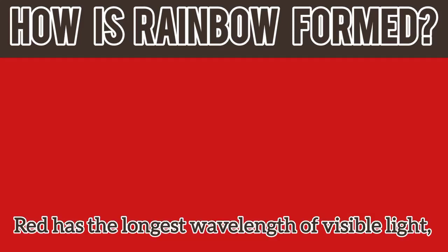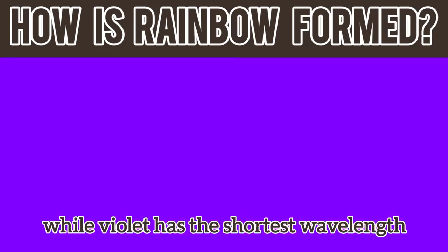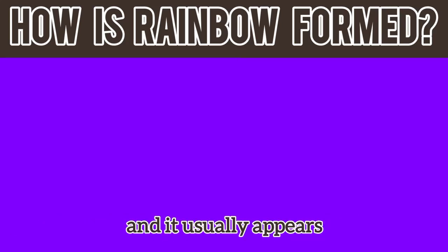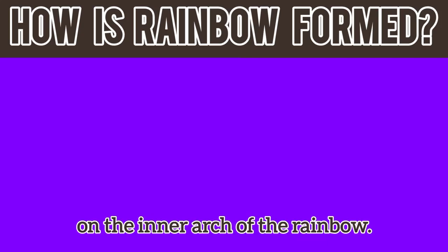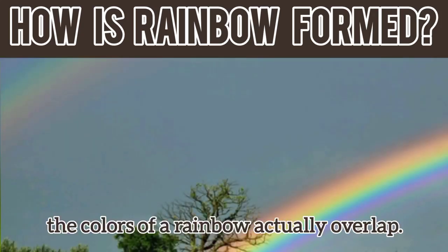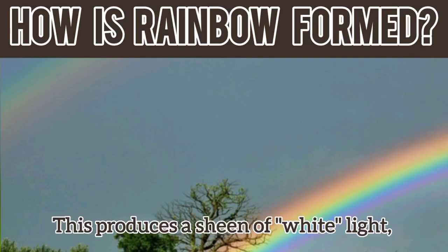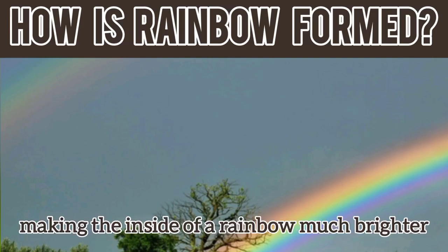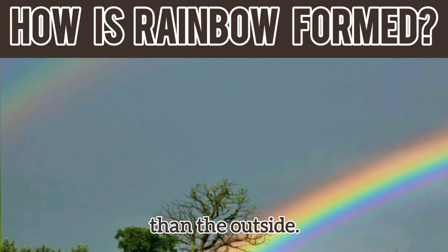Red has the longest wavelength of visible light, while violet has the shortest wavelength, and it usually appears on the inner arc of the rainbow. At their edges, the colors of the rainbow actually overlap. This produces a sheen of white light, making the inside of a rainbow much brighter than the outside.